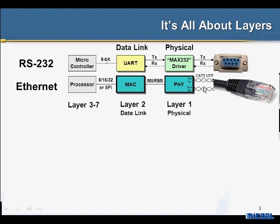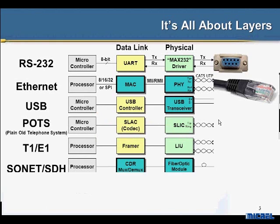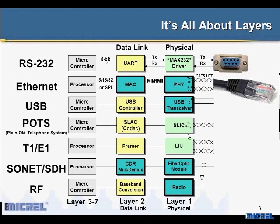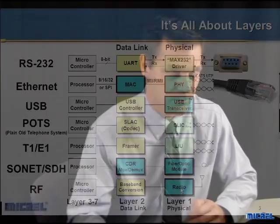Layer 1 is driving the copper wire. When you look at other communication systems you'll find the same thing — with USB there's a USB transceiver and a USB controller. For POTS, plain old telephone systems, layer 2 is called a SLAC and layer 1 is a SLIC, which drives your wires to do tip and ring. The important thing to remember is there's always a layer 1 and layer 2. These are done with chips — PHYs, MAX232s, those kind of things. Layer 1 drives copper wires, layer 2 reassembles it into a format the processor can communicate with. Everything above that is pretty much software.